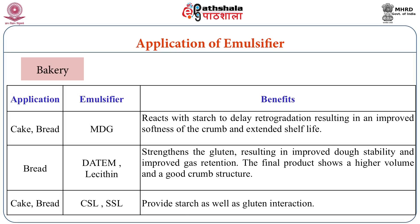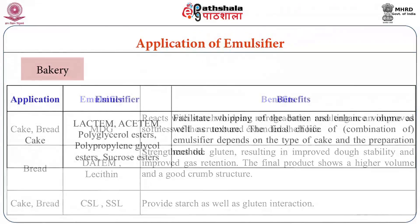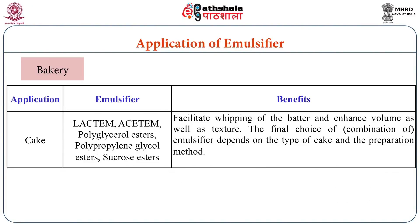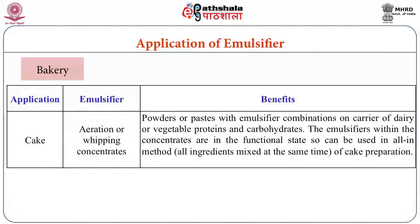CSL and SSL used in cake and bread provide starch and gluten interaction. In cake manufacturing, LACTEM, ACETEM, polyglycerol esters, polypropylene glycol esters, and sucrose esters facilitate the whipping of batter and enhance volume and texture. The final choice of emulsifier depends on the type of cake and the preparation method. Aeration and whipping concentrates in cake use powder or paste emulsifier combinations on a carrier of dairy or vegetable protein and carbohydrate.